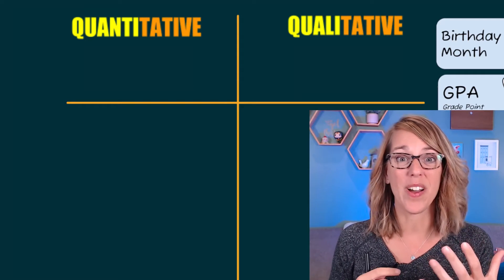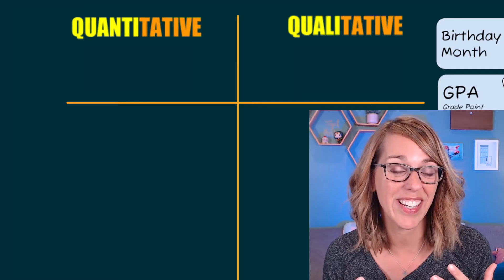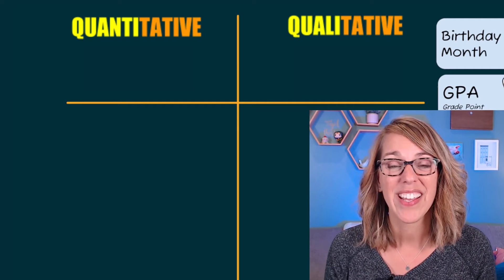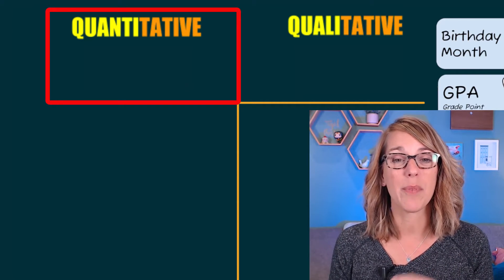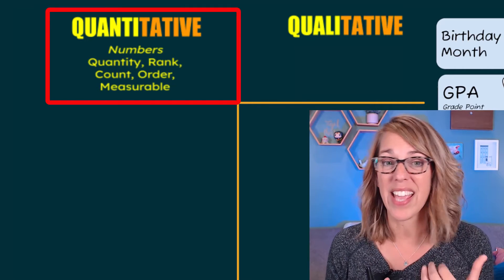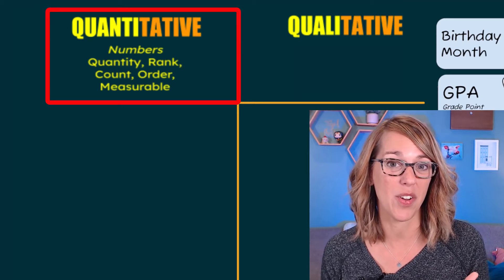Let's talk about qualitative and quantitative variables. Every single variable in statistics can be classified as one of those two types. If it's a quantitative variable, a quantitative variable is a number, but the number means something. It might be a count, a measurement, a ranking, or some kind of a quantity.